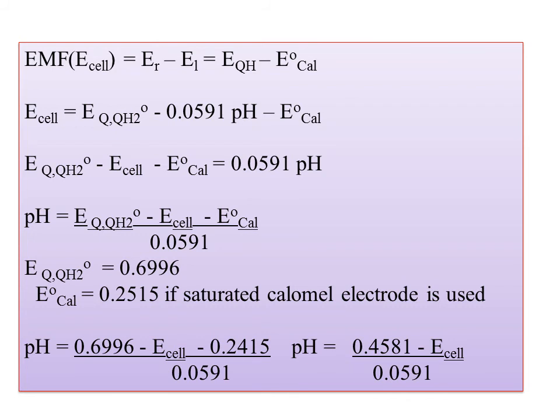Substituting the calomel electrode reference value, I substitute the values into the formula. The pH is equal to (0.6996 − E(cell) − 0.2415) / 0.0591. Simplifying: pH = (0.4581 − E(cell)) / 0.0591. I substitute the correct formula for this calculation.